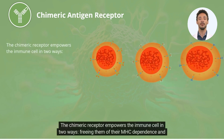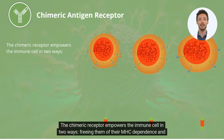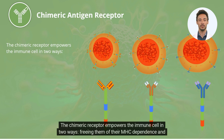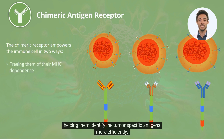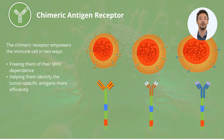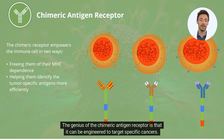The chimeric receptor empowers the immune cell in two ways: freeing them of their MHC dependence, and helping them identify the tumor-specific antigens more efficiently. The genius of the chimeric antigen receptor is that it can be engineered to target specific cancers.